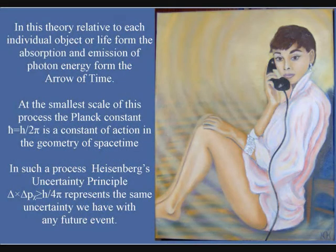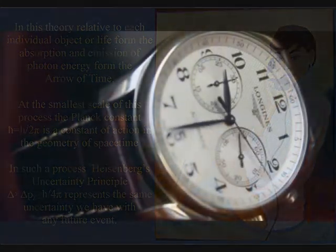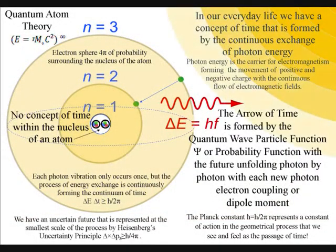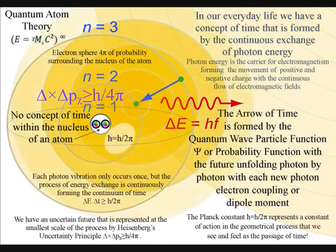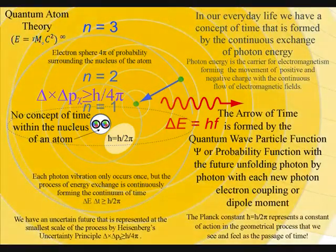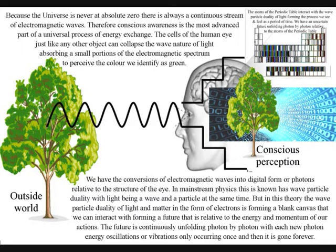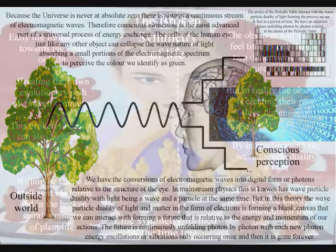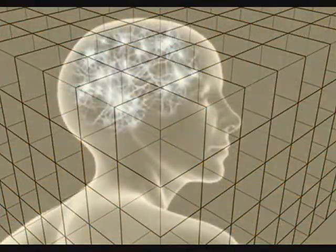Relative to each object and life form, this process forms what we see and feel as the arrow of time, always moving from a past to an uncertain future. Time is the most fundamental part of our lives, but it can also have no meaning at all, given our ability to have memories of the past that may have happened many years ago. In this theory, it is the holographic nature of the unified field or universal process that forms the potential for memories — just as the squared pattern of a chess board forms a structure for a game of chess, the brain forms a structure in three-dimensional space for the holographic principle to form the potential for memories of the past.